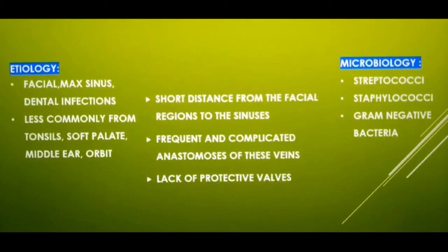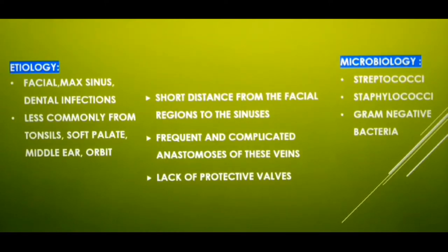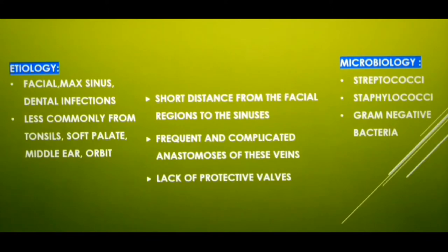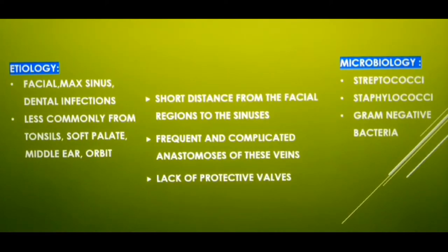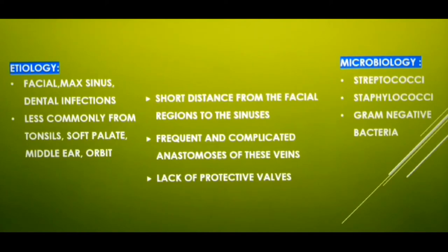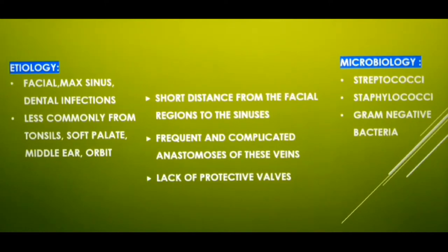The main causative factors of cavernous sinus thrombosis are infections arising from the face, maxillary sinus, and maxillary teeth. The less common causes are infections arising from tonsils, soft palate, middle ear, and orbit. Complications are rapid and occasional death can result from infections of the upper part of the face. Three possible reasons are the short distance from facial regions to the sinuses, frequent and complicated anastomosis of these veins leading to direct communications with the sinuses, and lack of protective valves — unlike other venous systems, the veins in the facial region are valveless.